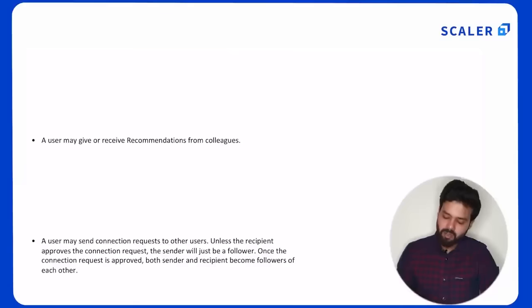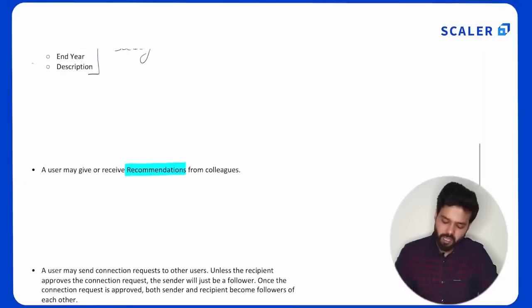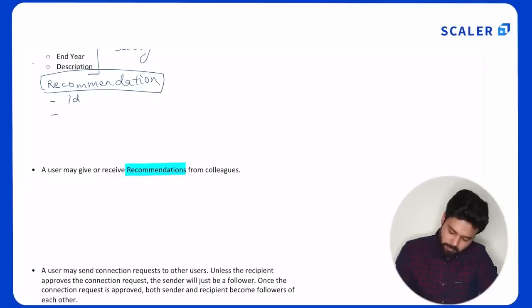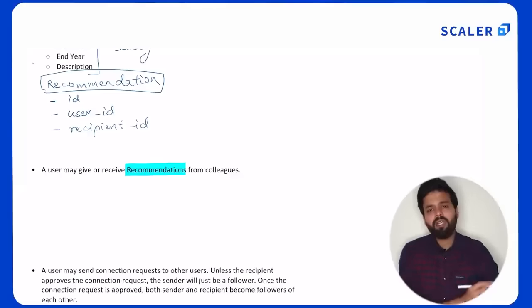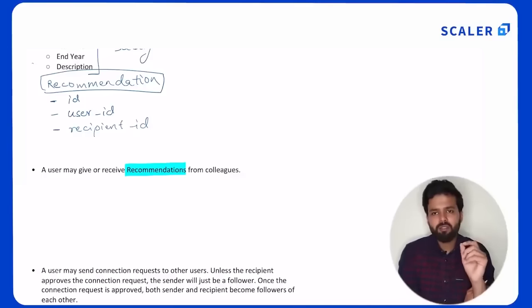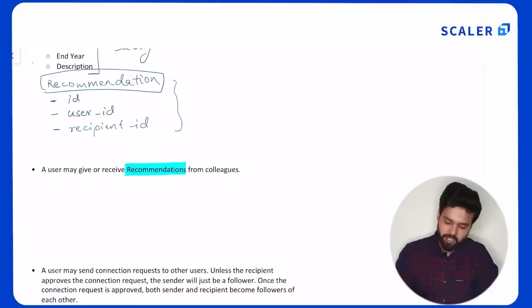The next requirement is recommendations. A user can either give or receive a recommendation. Since this is a list, it makes sense to have a separate entity rather than adding it as an attribute. So we create a Recommendation entity with an ID, a user ID for the person giving the recommendation, and a recipient ID. We don't need a mapping table here because a particular recommendation has just one giver and one recipient — that information is captured directly in this table. To find all recommendations I've received, I query the recommendations table where recipient ID equals my user ID.